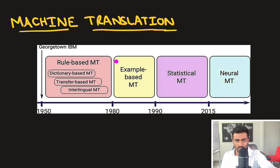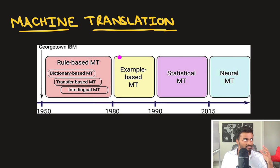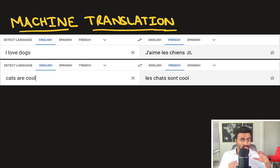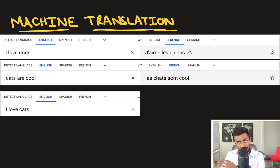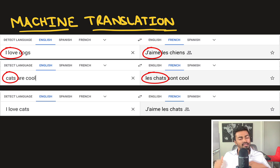Towards the 1980s, we moved towards a new paradigm called example-based machine translation. This involves using a database. Say we have two translations from English to French — one for 'I love dogs' and another for 'cats are cool.' Given that we know these translations, can we determine the translation of 'I love cats'? This can be done by looking at different examples in the database and piecing together a solution. It's probably better than rule-based systems, but it's also pretty rudimentary in its own way.